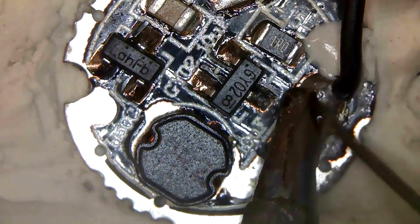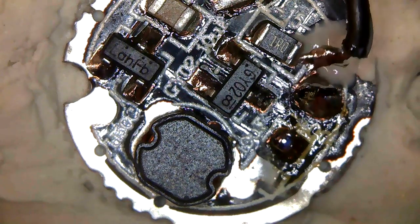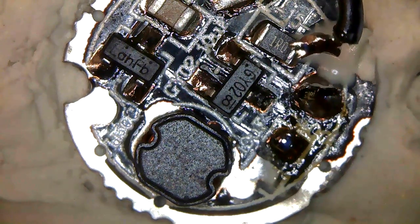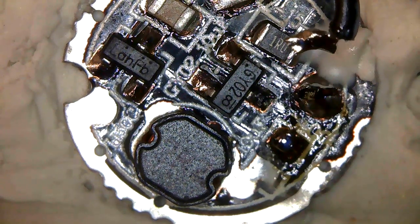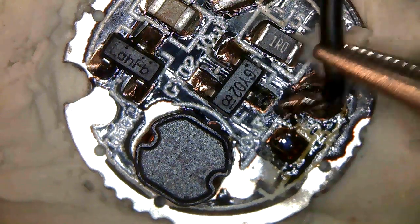Nice thing about that, of course, is it's going to be pretty easy to defeat. Just simply lift the wire from the LED and move it over to the voltage regulator and bypass that irritator chip.